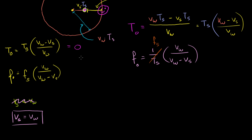A period of zero means you don't have to wait any time at all between successive crests — the entire waveform just gets infinitely bunched together into one impulse. And if we look at the frequency formula, you have something divided by zero, so you could say this is 1 over 0, which is undefined.